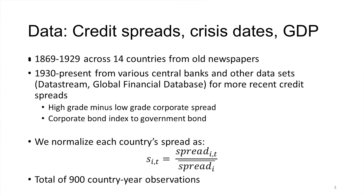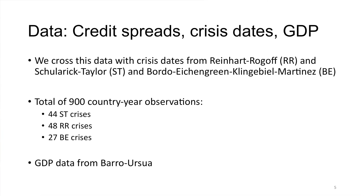We cross this credit spread data with crisis dates. Historians have examined our sample and identified events that look like financial crises — major bank failures. We pick out those dates that others have identified as a relevant chronology of crises. We have three sets of datings from different historians. We also use the Barro-Ursua GDP data, which is a constructed GDP dataset because GDP data was not collected systematically by governments for much of this period.